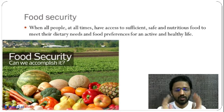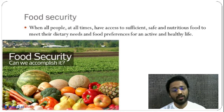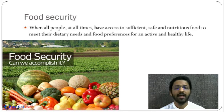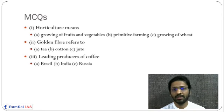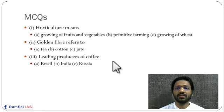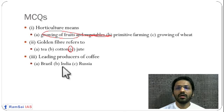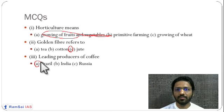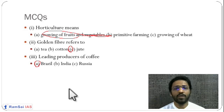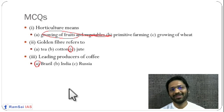I hope you have understood this chapter well. If you have any doubts, please let me know on Telegram. Now let us look at some MCQs based on this chapter: horticulture means growing of fruits and vegetables; golden fiber refers to jute; leading producer of coffee is Brazil. These are simple questions. See you tomorrow, bye!